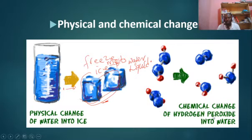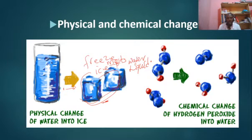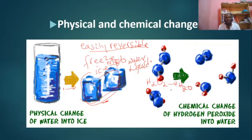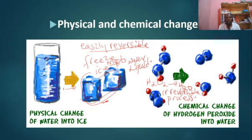Now look at what we call a chemical change — the conversion of hydrogen peroxide into water. Hydrogen peroxide can be converted into water, but this process cannot be reversed. The process of taking water into ice and then taking ice back to water is easily reversible. But the conversion of hydrogen peroxide to water is an irreversible process.